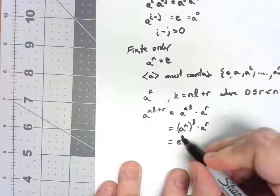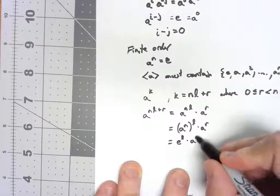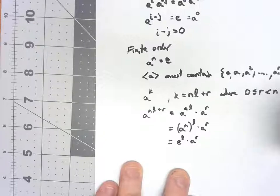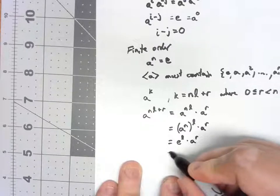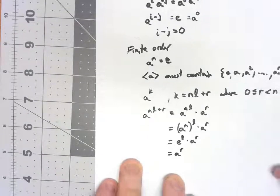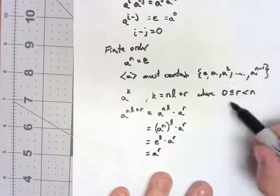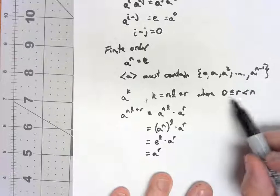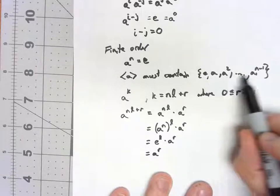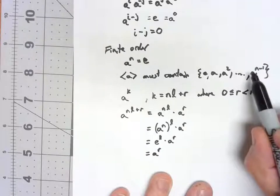So I've got E to the L times A to the R, but E to any power is just E, that's my identity, and the identity times anything is that thing, so it's A to the R. And looking back, R was something between zero and N. R had to be one of those exponents in that set we started with. So there we go. Every power of A can be written as one of these things.